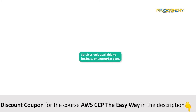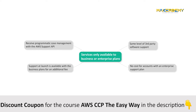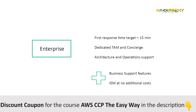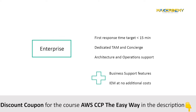The remaining support services are only available to the business or enterprise plans. Business and enterprise accounts both receive programmatic case management with the AWS Support API and the same level of third-party software support. Support at launch is available with business plans for an additional fee, but is included at no cost for enterprise accounts. The remaining support services are available under the enterprise plan only, including dedicated AWS staff, reviews of operations processes and system architecture, and additional training material.